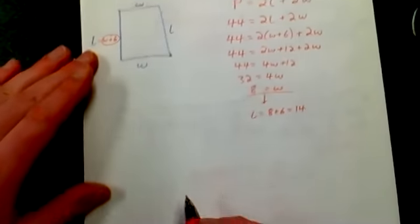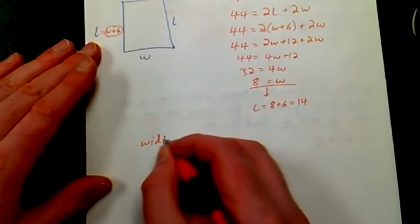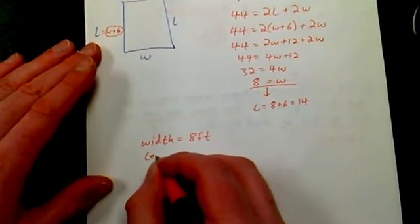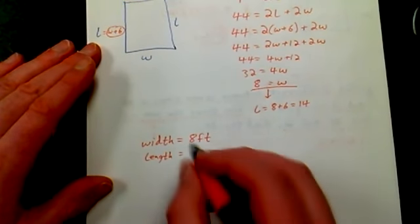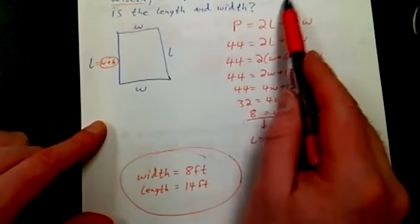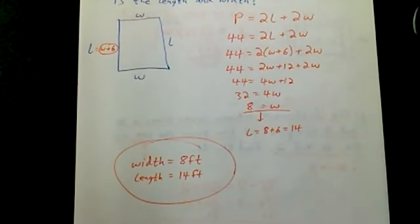So what's my final answer? Well, the width is equal to 8 feet and the length is equal to 14 feet. And you can also check that in and make sure the perimeter ends up being 44 feet. All right, till next time.